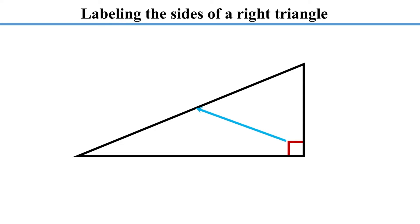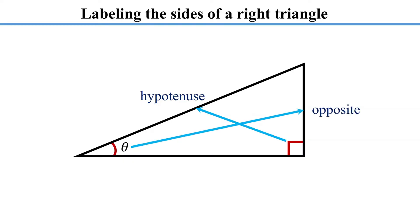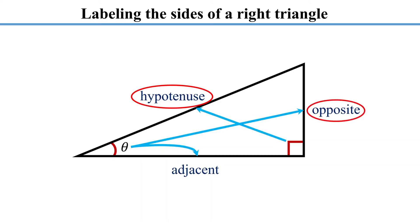The side opposite the right angle is the hypotenuse — it is always the longest side of a right triangle. The other two sides are labeled with respect to one of the two acute angles. Let's say this angle is theta. The side opposite theta is the opposite side, while the remaining side, adjacent to theta, is the adjacent side. When labeling a right triangle, start with the hypotenuse, then label the opposite side, and the remaining side is the adjacent side.